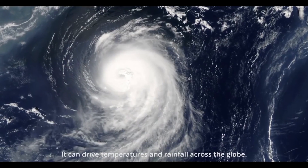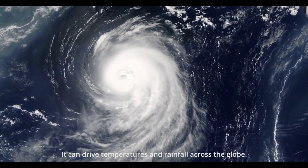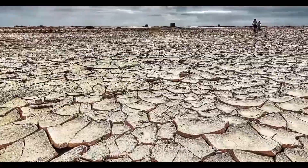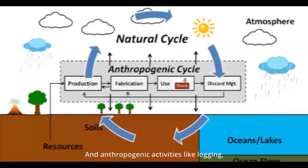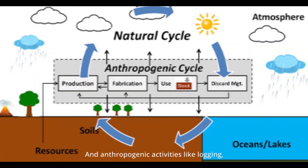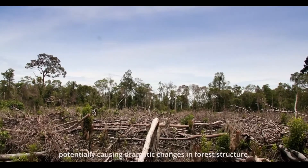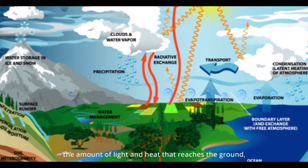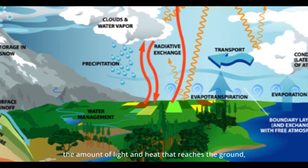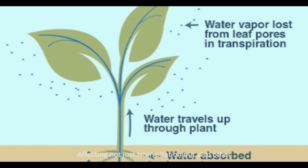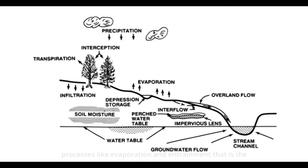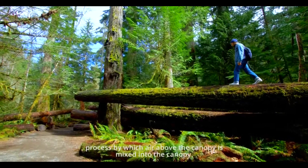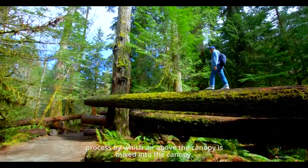Transpiration can drive temperatures and rainfall across the globe. Forests are also dynamic ecosystems, with both natural events such as pest infestations and droughts, and anthropogenic activities like logging, potentially causing dramatic changes in forest structure. The arrangement of trees within a forest influences the amount of light and heat that reaches the ground, affecting not just transpiration but also other processes like evaporation and entrainment — the process by which air above the canopy is mixed into the canopy.